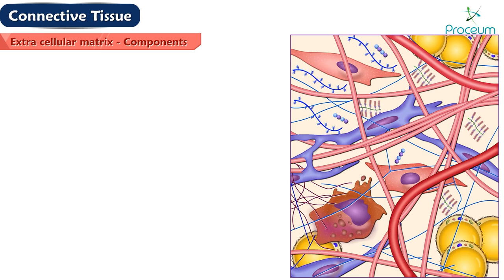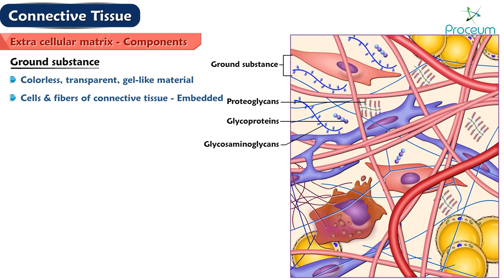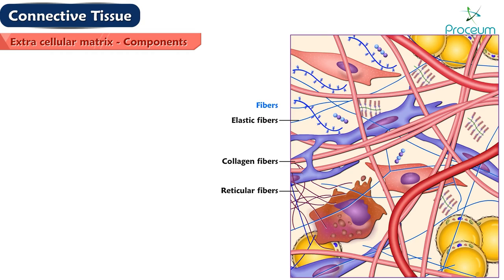Ground Substance is a colorless, transparent, gel-like material in which the cells and fibers of connective tissue are embedded. It is a complex mixture of glycosaminoglycans, proteoglycans, and glycoproteins. Ground substance serves as a lubricant, helps to prevent invasion of tissues by foreign agents, and resists forces of compression.